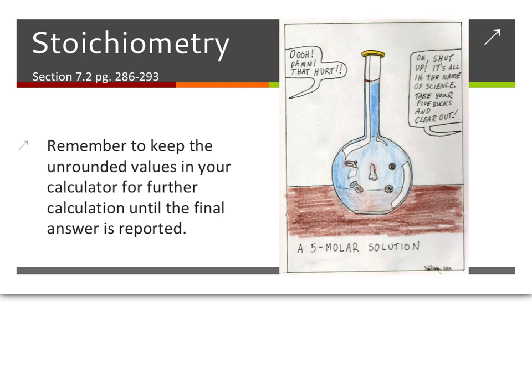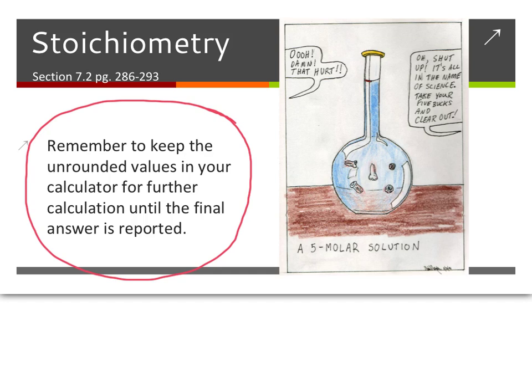This is the actual start of stoichiometry, which will cover section 7.2 in the textbook. This is talking about gravimetric stoichiometry. Please notice that in the entire stoichiometry unit, you want to keep the unrounded values in your calculator until you get to your very final answer. So don't round or put it into significant digits until the final answer.